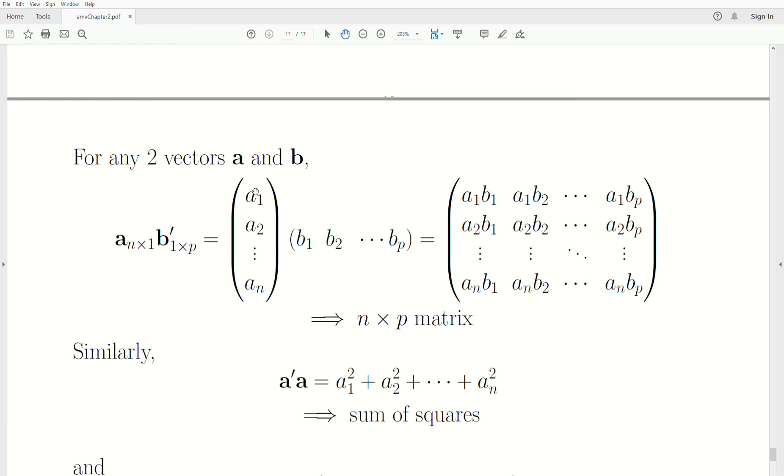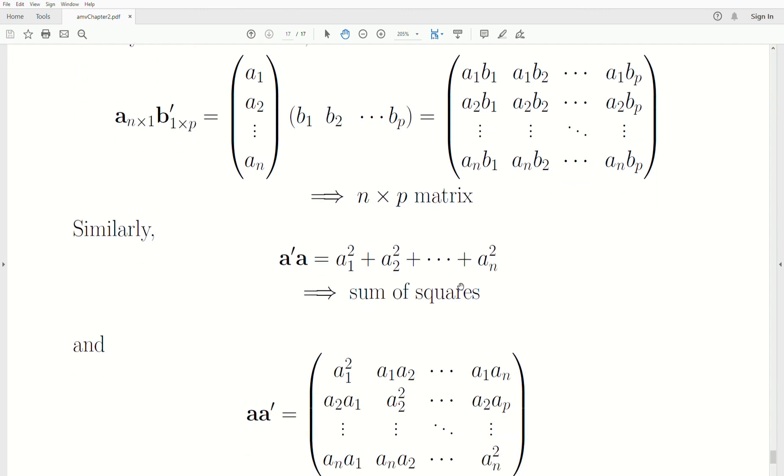And to do this multiplication, you take the first row times the second column, or first column, first row, second column, all the way to the Pth column, right? We're going to get an N by P matrix. And then, you know, then ultimately you take the Nth row times the first column, Nth row times the second column, all the way to the Pth column. So we end up with a matrix.